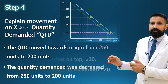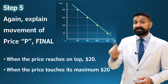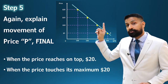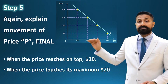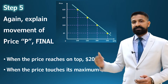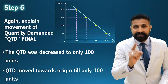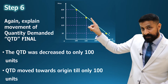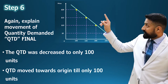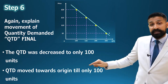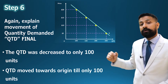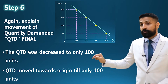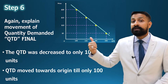Step five: you again explain the Y-axis movement, but this time for the top point. You say: 'When the price reaches the top — 20,' or 'When the price touches the maximum point, which is 20.' Step six: explain the X-axis for the last point. You say: 'The quantity demanded decreased to 100,' or 'The quantity demanded moved toward the origin till only 100 units.' Always mention units for quantity and dollars or currency for price.